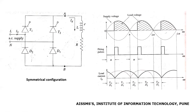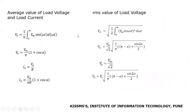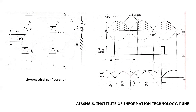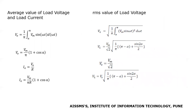In this way, the operation of the semi-controlled converter connected to RL load is completed, as shown by the waveforms. The equations for average output voltage, average load current, and RMS value of load voltage are shown here.